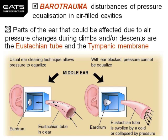Barotrauma is disturbances of pressure equalisation in airfield cavities. The parts of the ear that could be affected due to air pressure changes during climbs and or descents are the eustachian tube and the tympanic membrane.